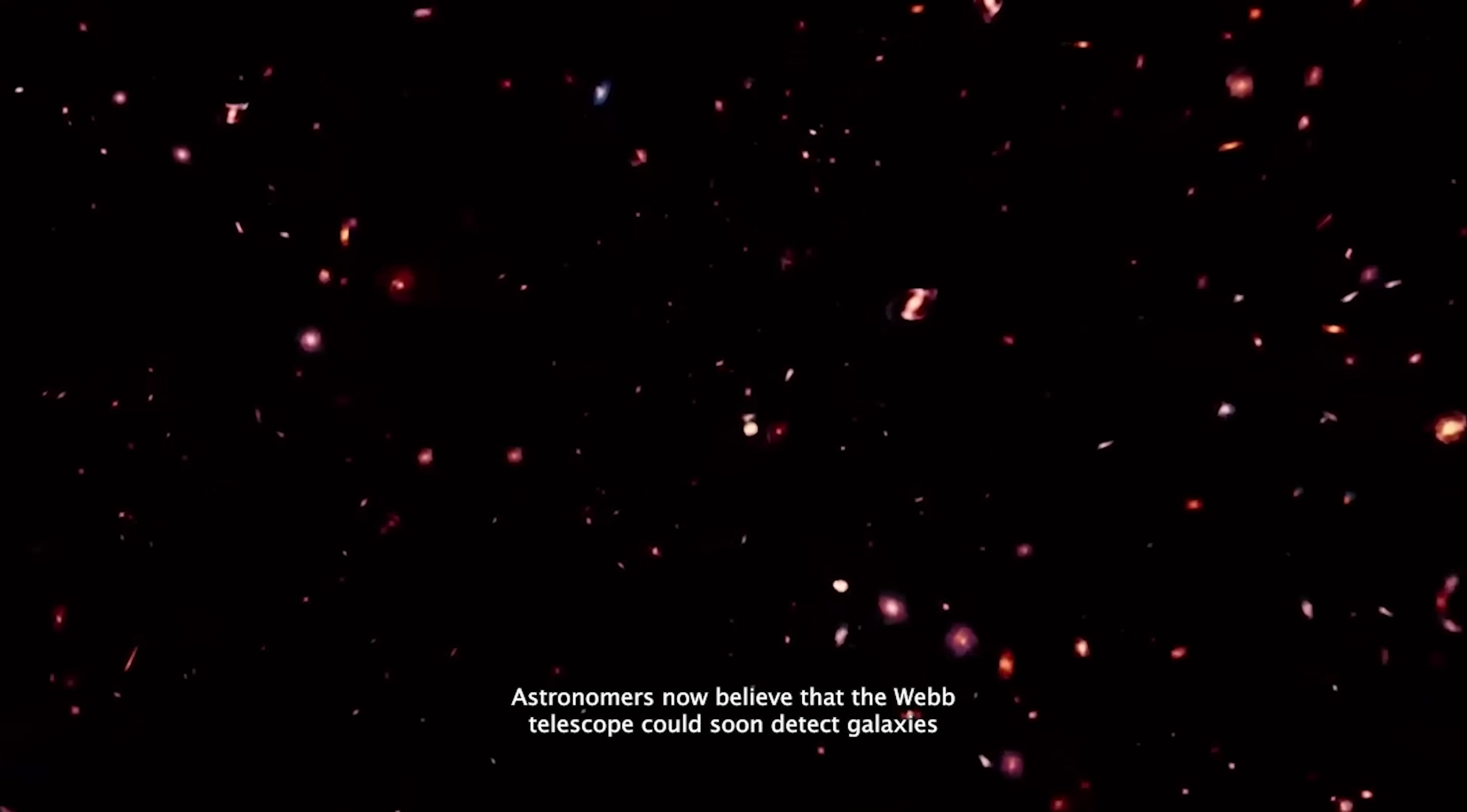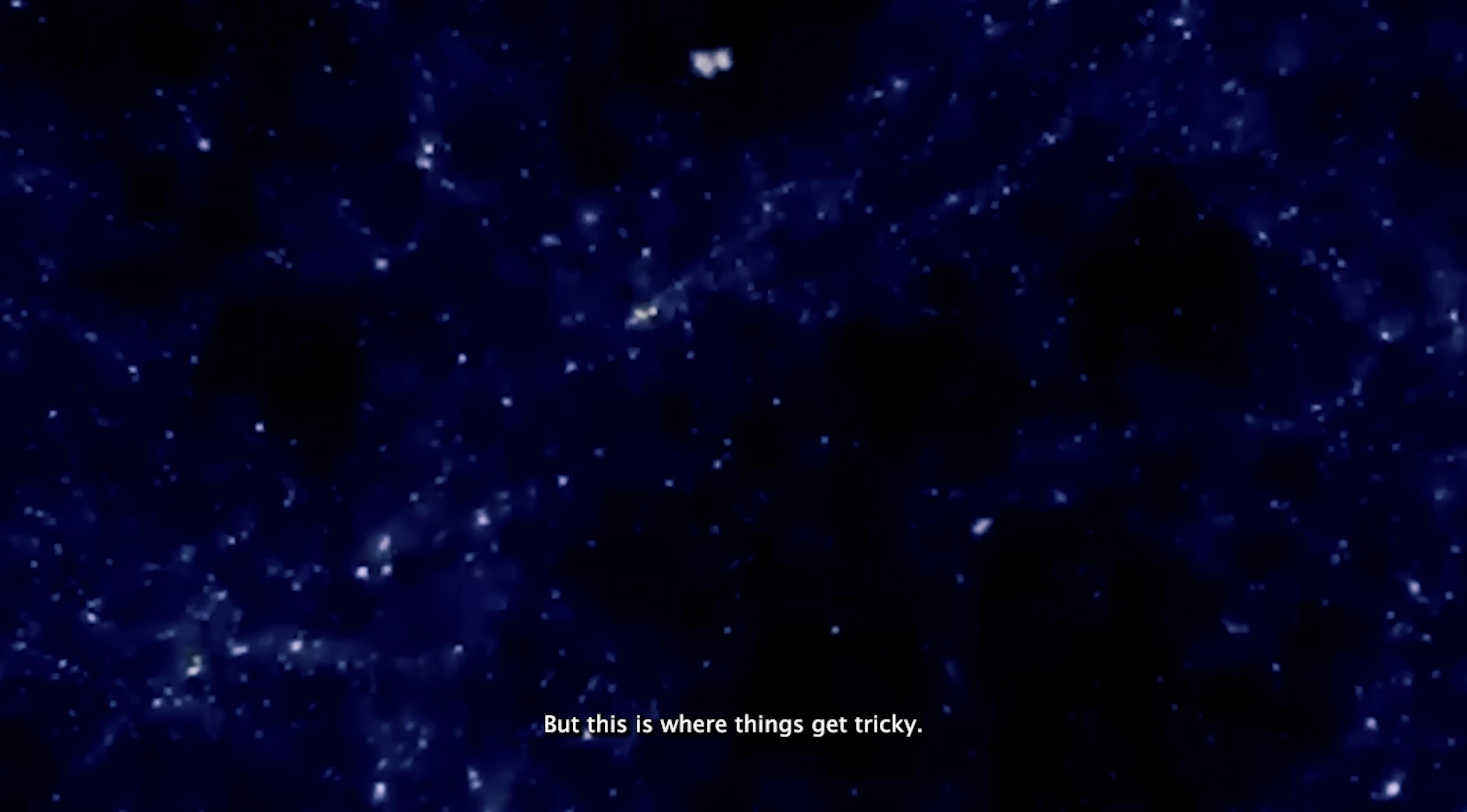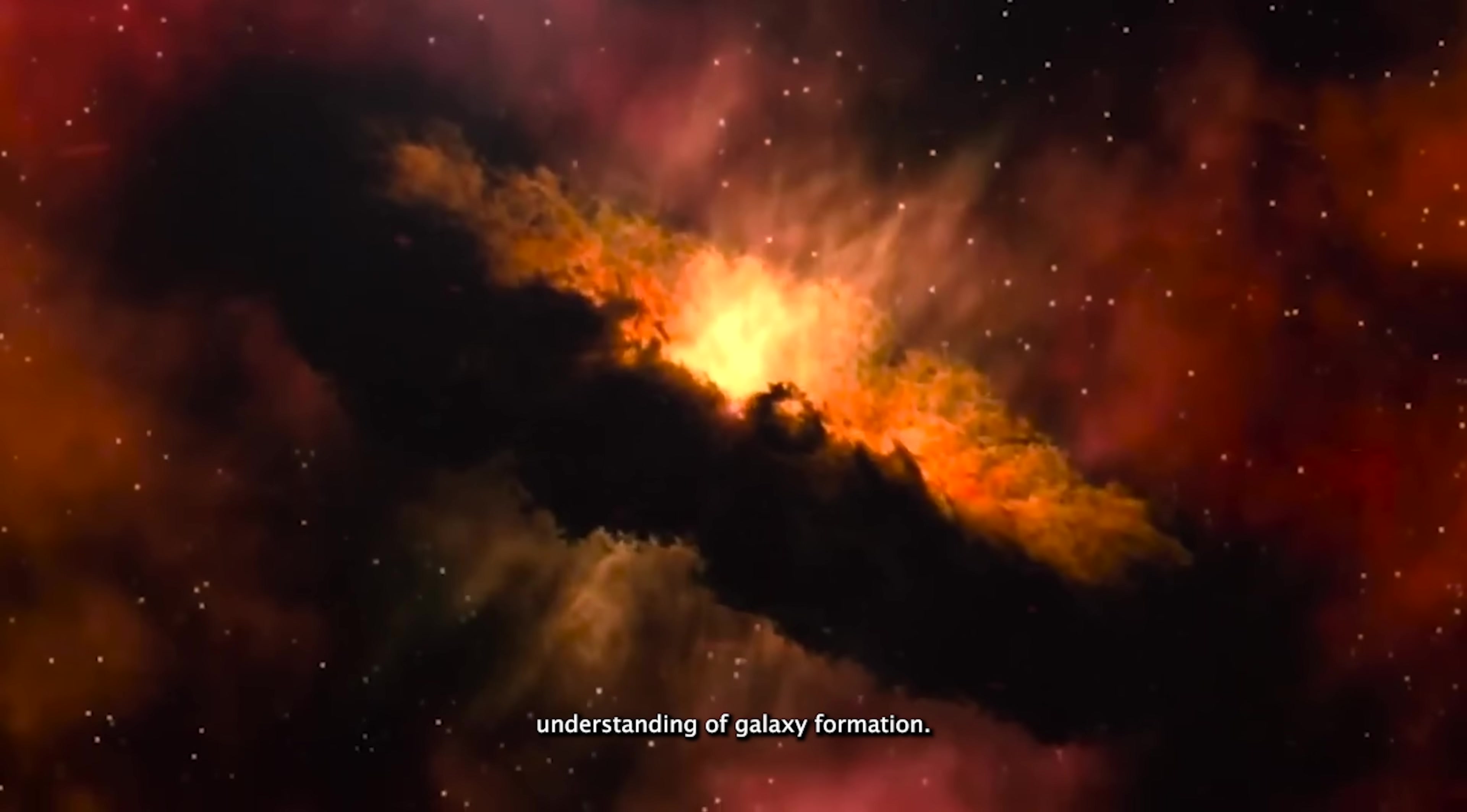Astronomers now believe that the Webb Telescope could soon detect galaxies from even earlier in cosmic history, perhaps at a redshift of 20. That would take us back to a time when the universe was only a few hundred million years old. But this is where things get tricky. If Webb keeps uncovering galaxies this early, and especially if they continue to defy expectations, it could completely upend our current understanding of galaxy formation.